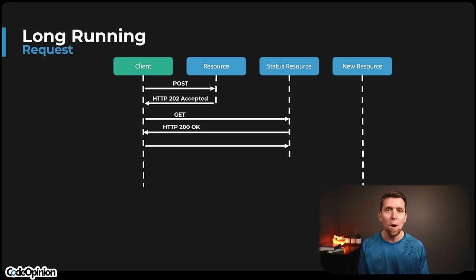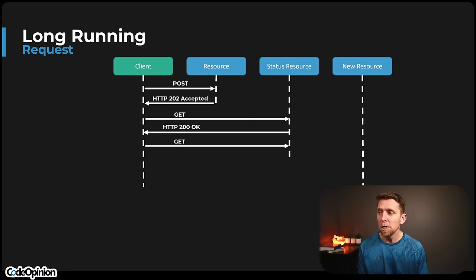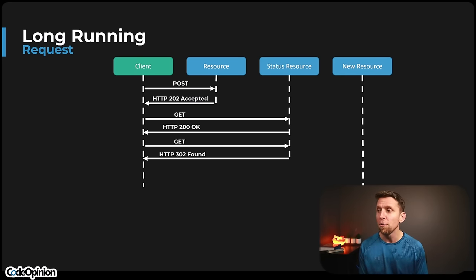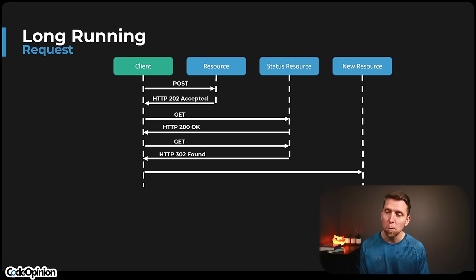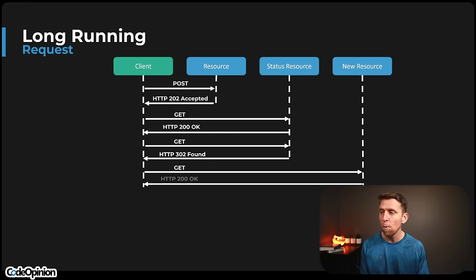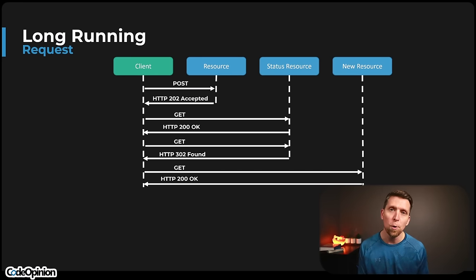You can then poll that request after some retry interval, also provided in the header. Once asynchronously the transcript has been generated, we can return a 302 Found with a Location header pointing to the new resource. That way our client knows where the new resource is, makes that GET request, and we return the transcript with a 200 OK.